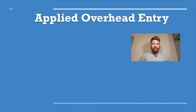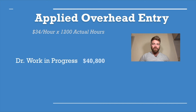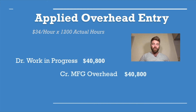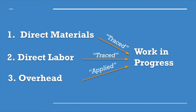Now we need to record overhead in a journal entry. We take our predetermined rate of $34 per labor hour and multiply it times our actual direct labor hours used. By multiplying 34 times 1,200, we debit work in progress for $40,800 and credit our manufacturing overhead account for $40,800. To sum it up: direct materials and direct labor are traced to work in progress, but our overhead is applied to work in progress.